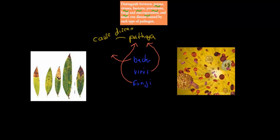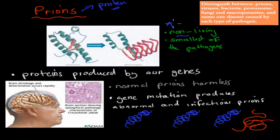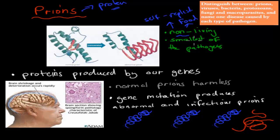So this is what we have to cover — these different types. The first one is prions. Prions is a relatively interesting one. Prions are actually proteins, and these proteins are non-living, which means they don't self-replicate. They don't feed, they don't consume food, so it's not really a living thing. And they are the smallest of all the pathogens — really tiny, because they're just a protein.